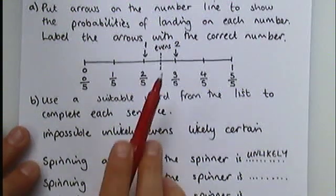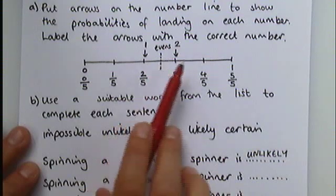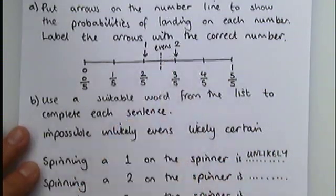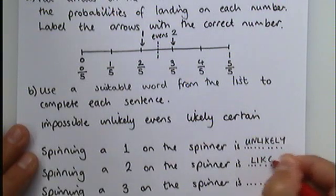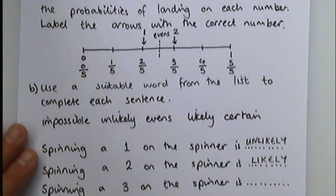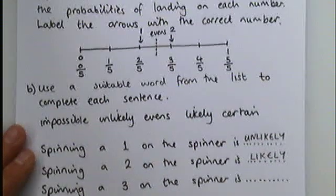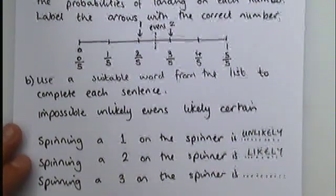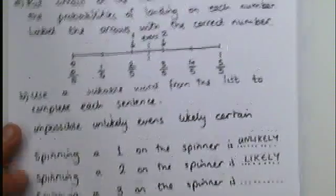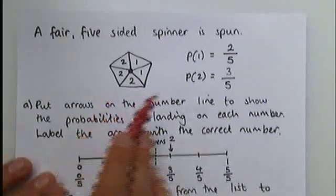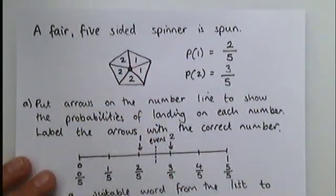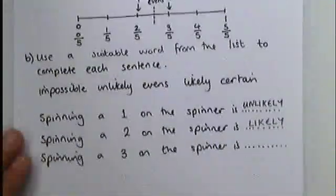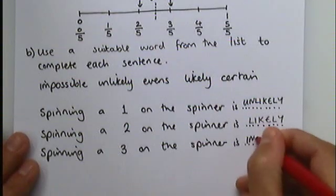The probability of spinning a two on the spinner is on the right-hand side. It's going towards certain. It's certainly likely, or more likely than evens, that that is going to happen. So we describe it as likely. And spinning a three on the spinner, well, there were no threes on this spinner at all. You can't do it. If you think about physically spinning that spinner, it would never land on a three. So it is impossible.